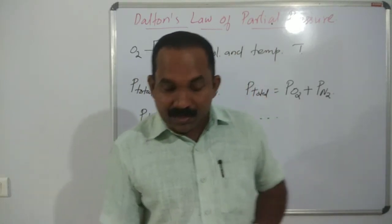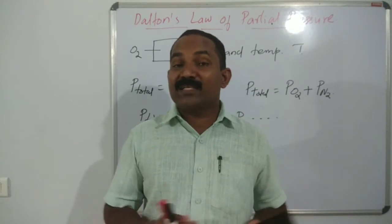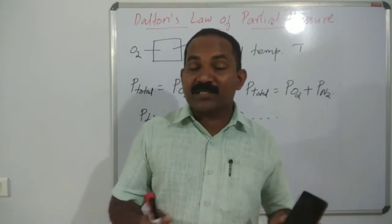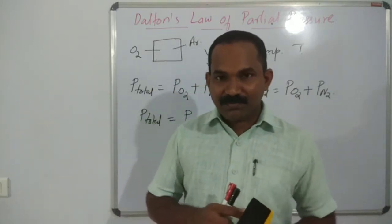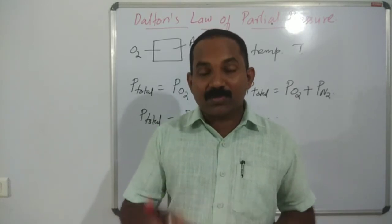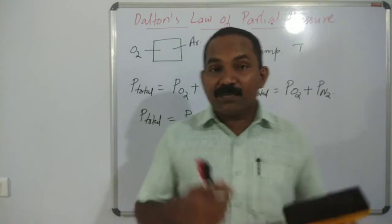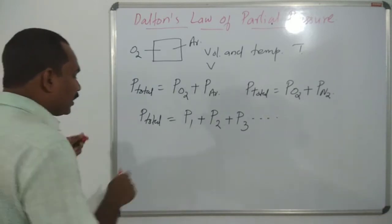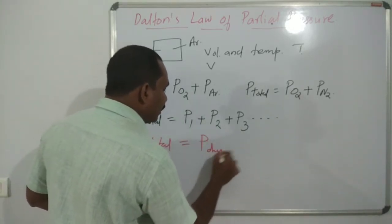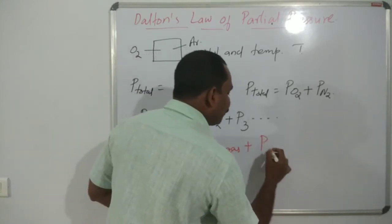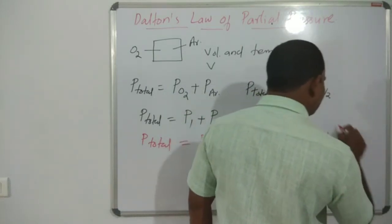Generally, we collect gases over water. When gas is collected over water, the gas becomes moist — it contains water vapor as well, because water vaporizes. So in that mixture, water vapor as well as the dry gas is present. The total pressure P_total equals the partial pressure of the dry gas plus the partial pressure of water.